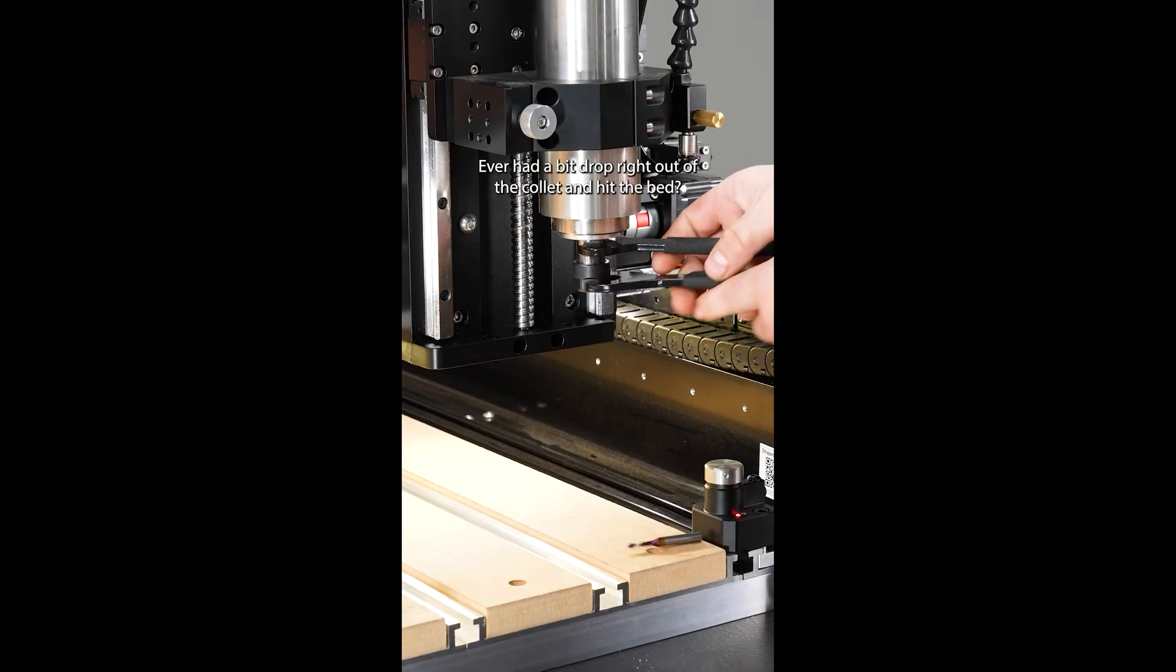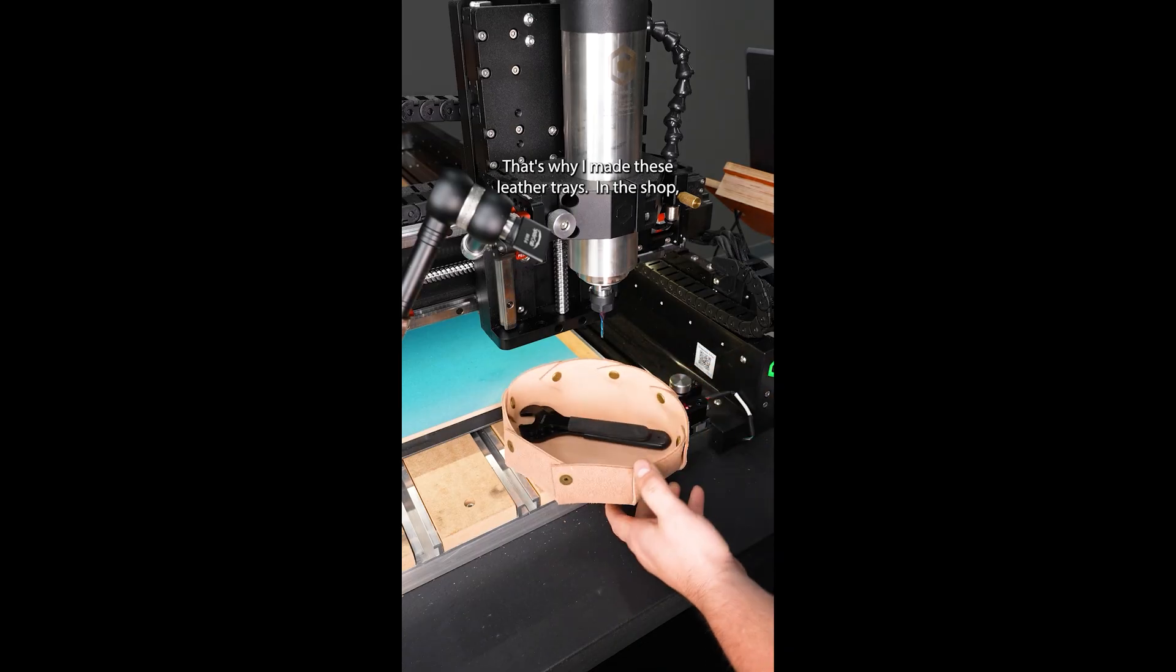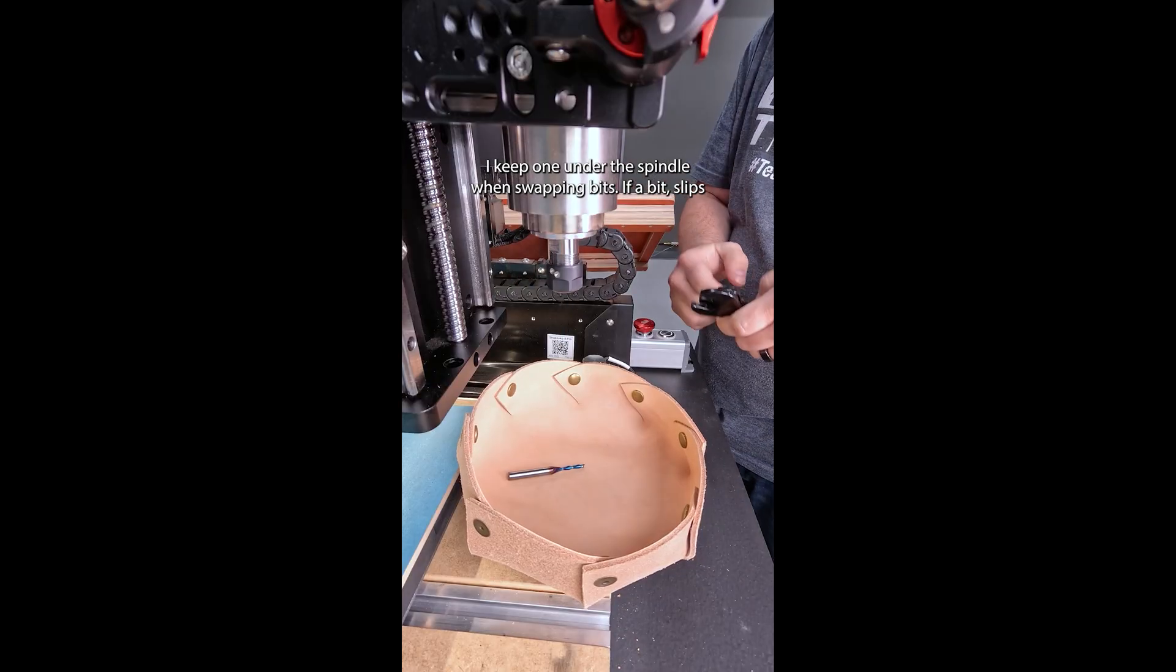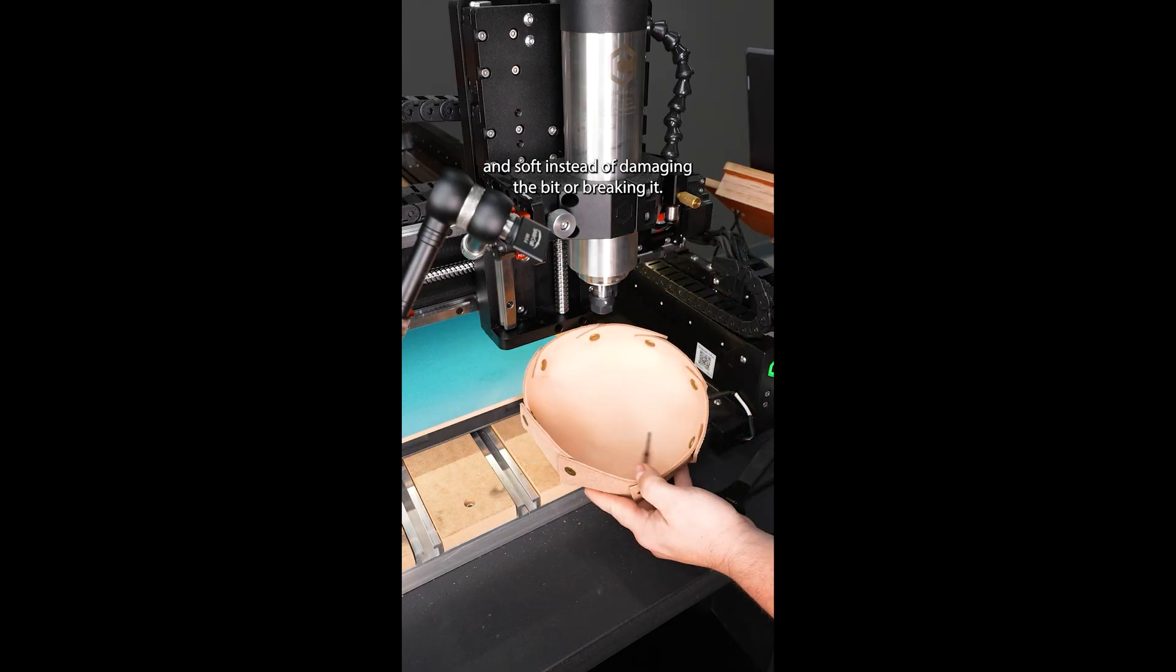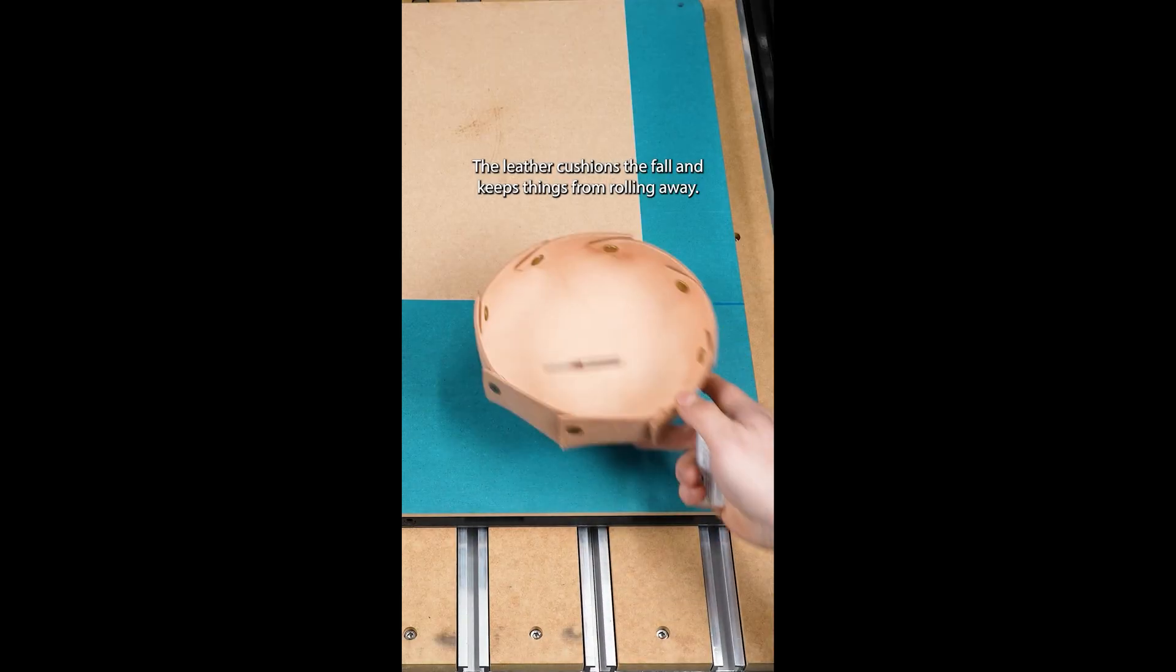Ever had a bit drop right out of the collet and hit the bed? That's why I made these leather trays. In the shop, I keep one under the spindle when swapping bits. If a bit slips, it lands soft instead of damaging the bit or breaking it. The leather cushions the fall and keeps things from rolling away.